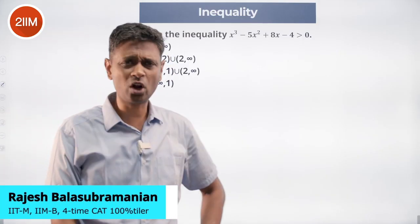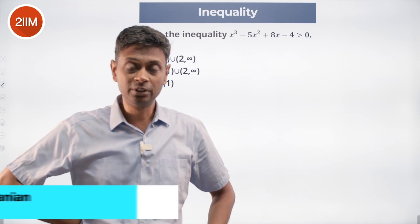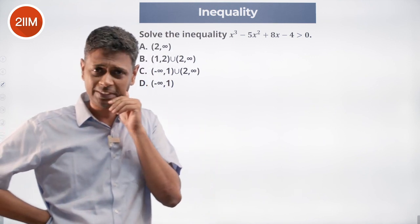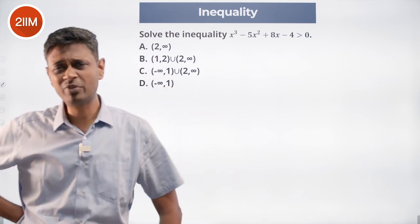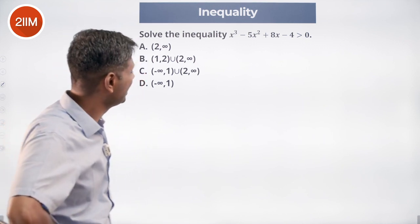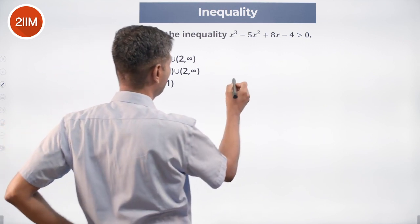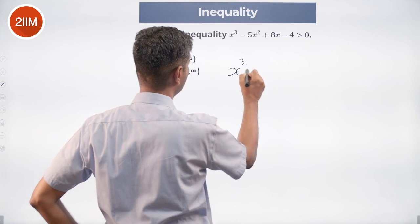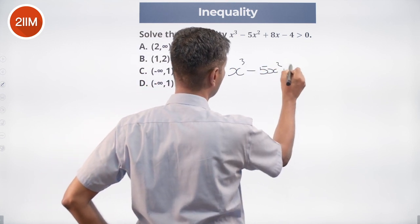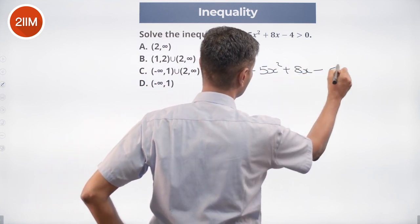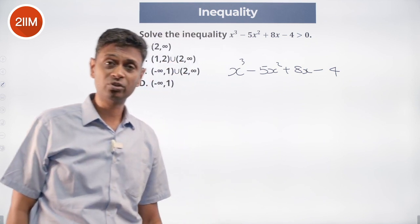Nice question. To solve a cubic equation, if you can somehow knock it open and factorize it, it becomes far simpler. So how do we factorize x³ - 5x² + 8x - 4? Oldest trick in the book.